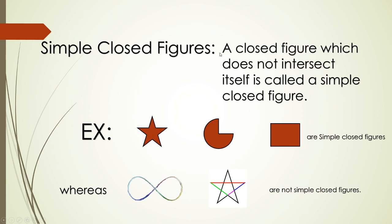Simple closed figures: a closed figure which does not intersect itself is called a simple closed figure. In this example, the starting point is the ending point, so this is a closed figure. And it is not intersecting itself anywhere, so this star is an example of a simple closed figure.